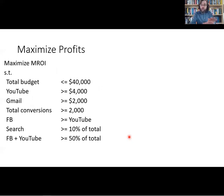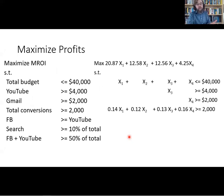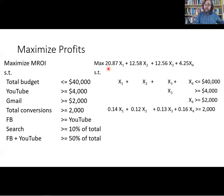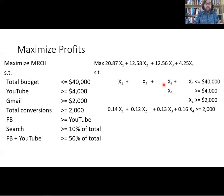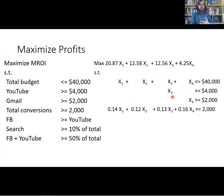So how do we write these constraints? Some of them are pretty straightforward. Maximizing return on investment — we know from the spreadsheet that the ROI for X1 is $20.87, $12.58 for X2, etc. The total spending has to be less than or equal to $40,000, so we just add up the amounts across all four categories. X3 has to be at least $4,000, and X4 has to be at least $2,000.